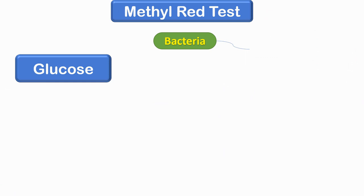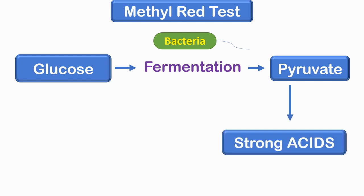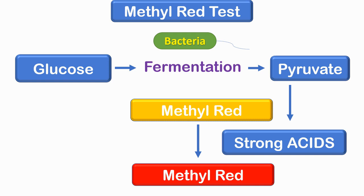The next test is the methyl red or MR test. Some bacteria ferment glucose into pyruvic acid, which is converted by the mixed acid pathway into stable acids like lactic acid, formic acid, and acetic acid in large quantities, thus decreasing the pH of the medium significantly. Methyl red indicator changes its color at a considerably lower pH than other indicators, which is why this test is considered a quantitative test for acid production. Organisms must produce strong, stable acids sufficient to maintain low pH for 24 to 48 hours while resisting the acid buffers in the medium.